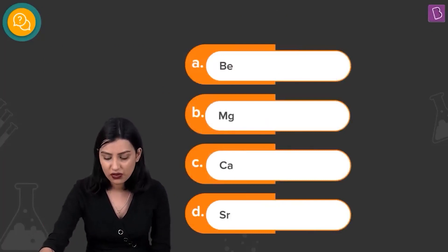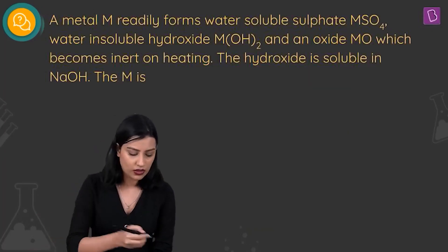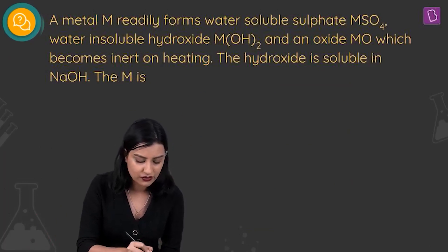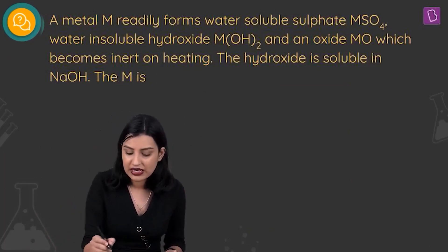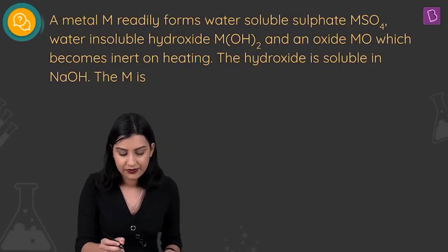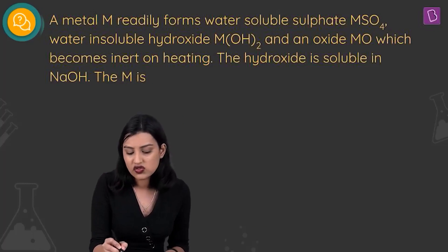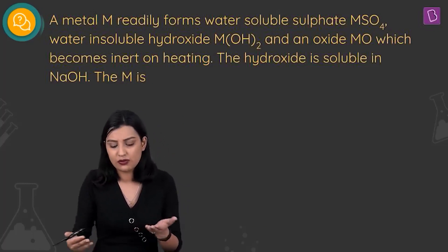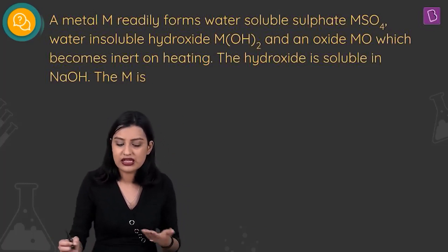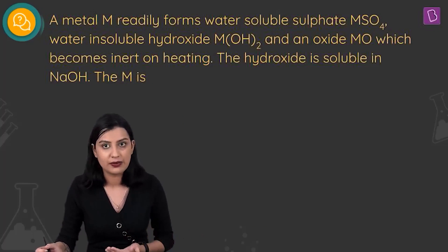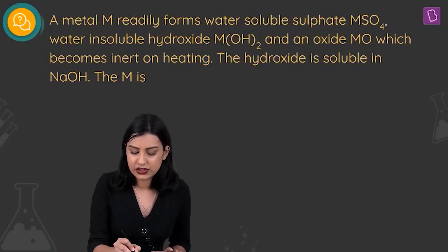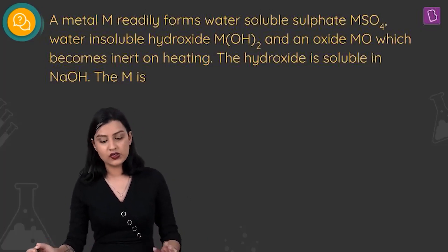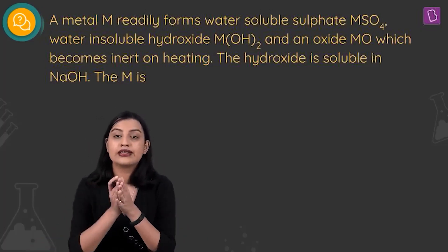Before we get into the answer, let's analyze the question. We have a metal M whose sulfate is soluble, a water-insoluble hydroxide, and from the formula we can see we're talking about an alkaline earth metal. The oxide becomes inert on heating.